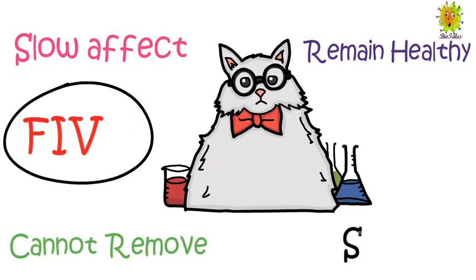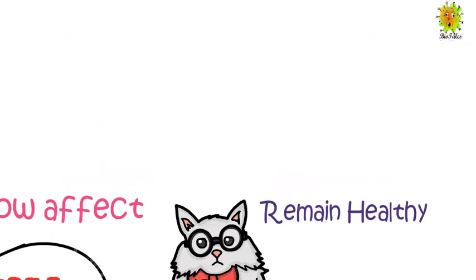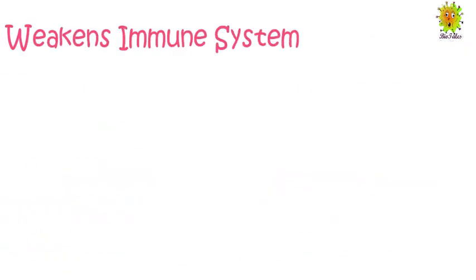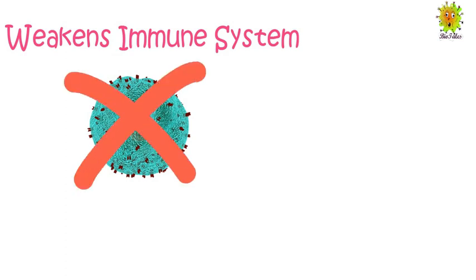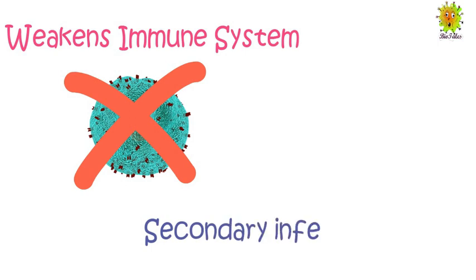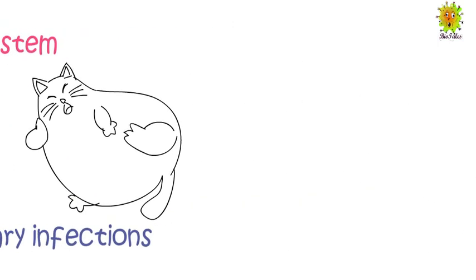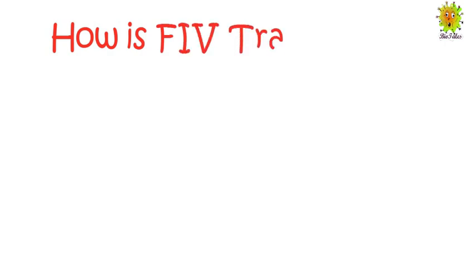The virus remains in the saliva of the infected cat. Although the virus acts very slowly, it still weakens the immune system of the cat. The cat can be infected by various secondary infections due to its weakened immune system.